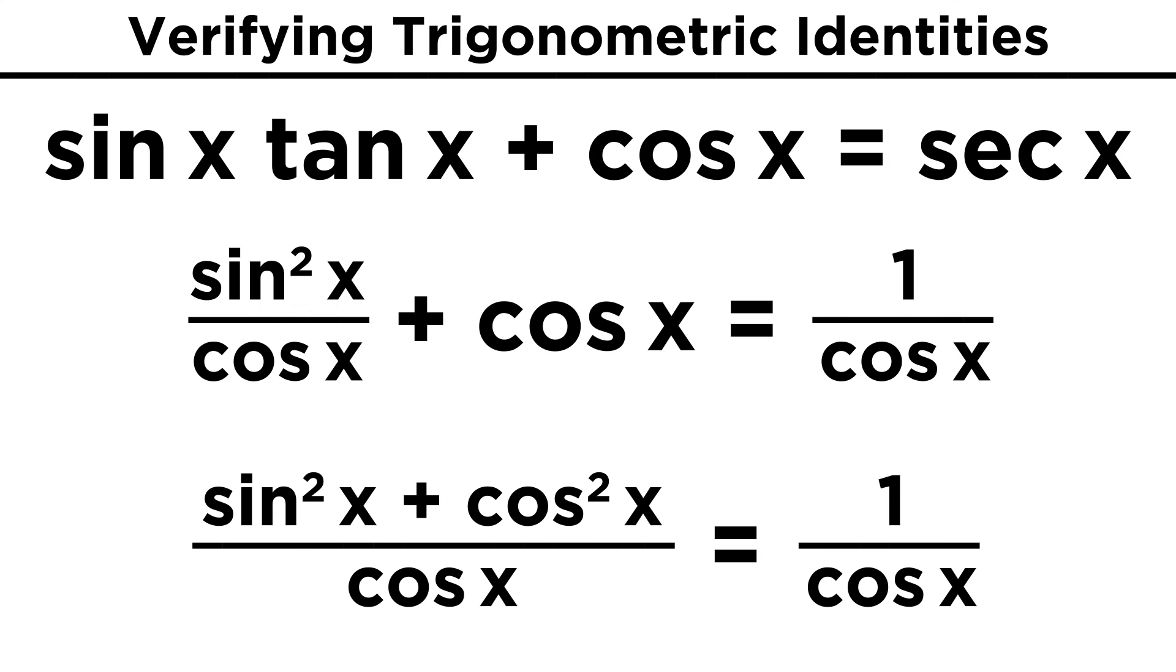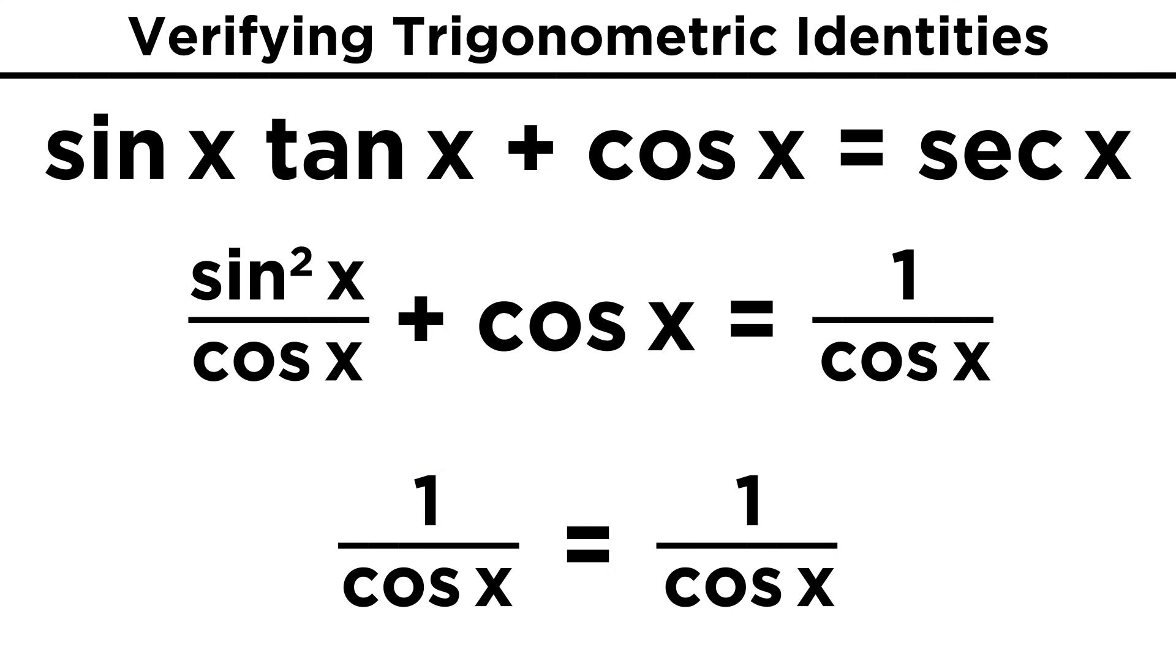The reason this is useful is that we can now use another identity we know, the one that says sine squared plus cosine squared equals one. That means we can change this to one, and we have one over cosine. Done and done.